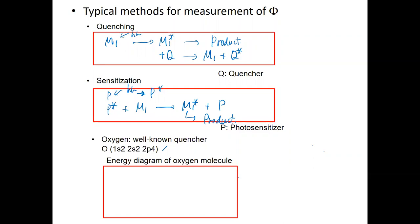So photo-sensitizer promotes the M1 reaction to the product species. On the other hand, quenching molecules stop the reaction. These are the typical methods to control the photochemical reactions.